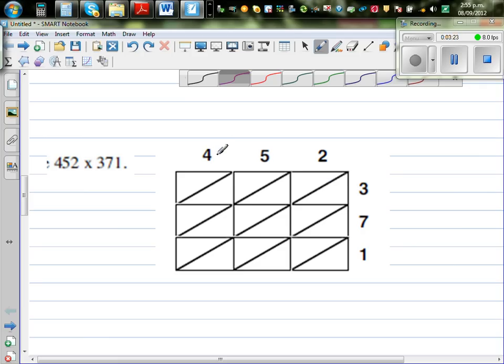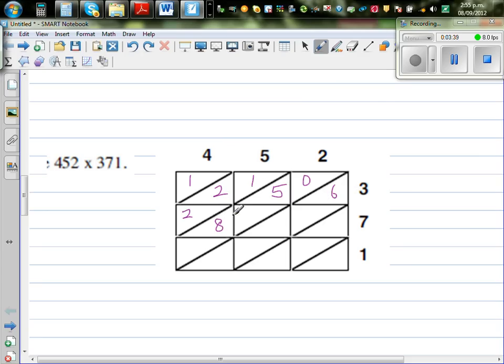I'll do this a bit faster. 4 times 3 is 12. 5 times 3 is 15. 2 times 3 is 6, so 06. 4 times 7 is 28. 5 times 7 is 35. 2 times 7 is 14. 4 times 1 is 4. 5 times 1 is 5. And 2 times 1 is 2.